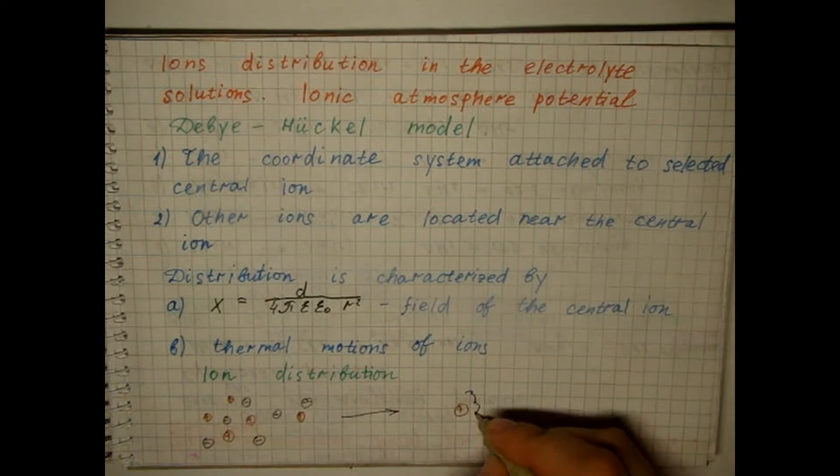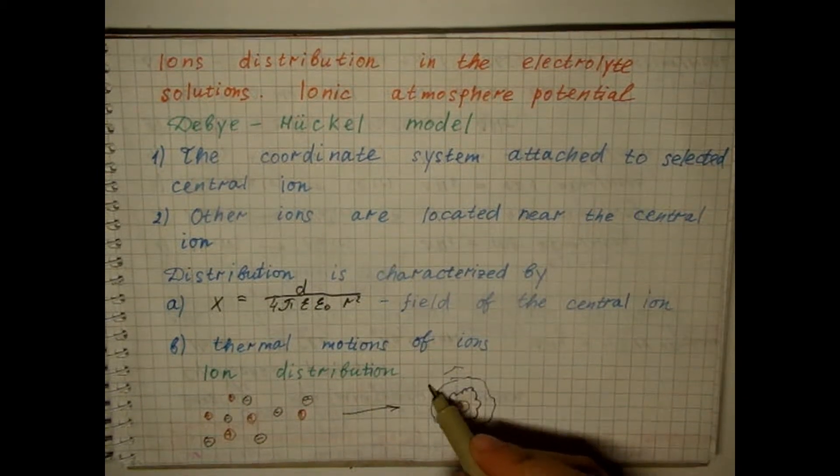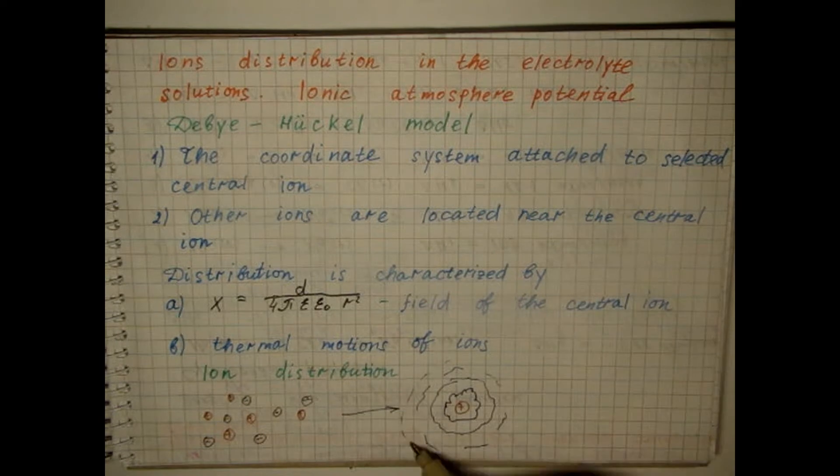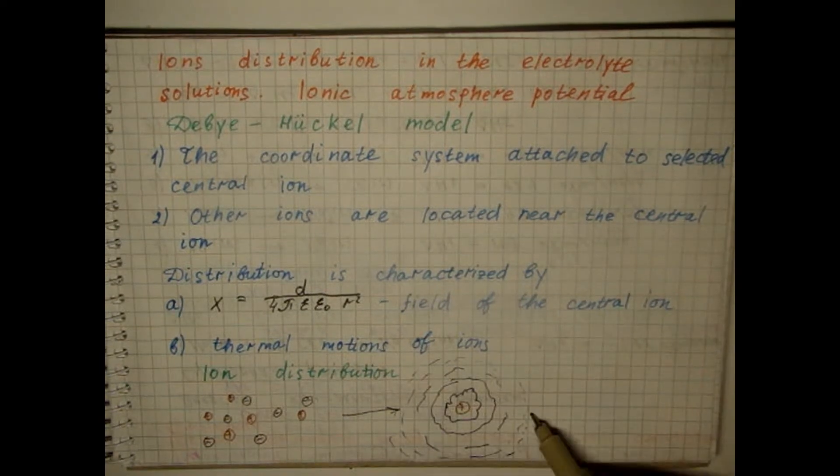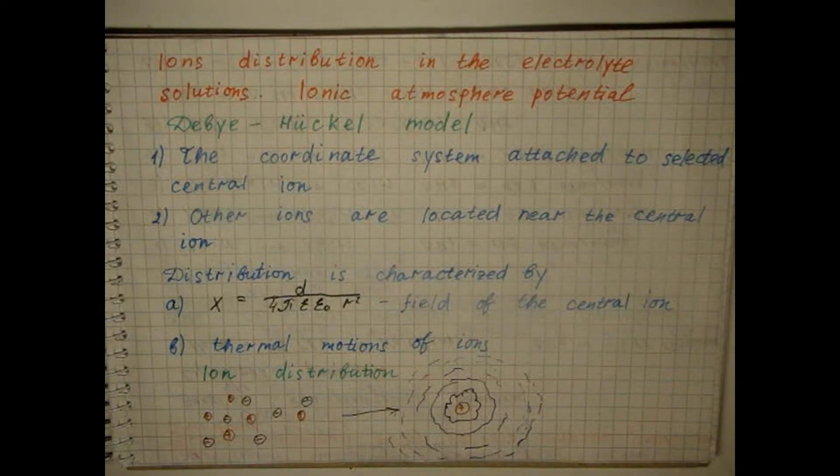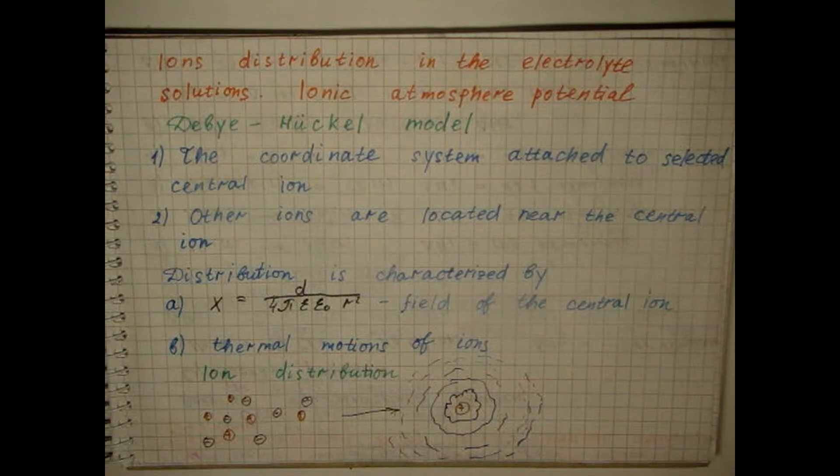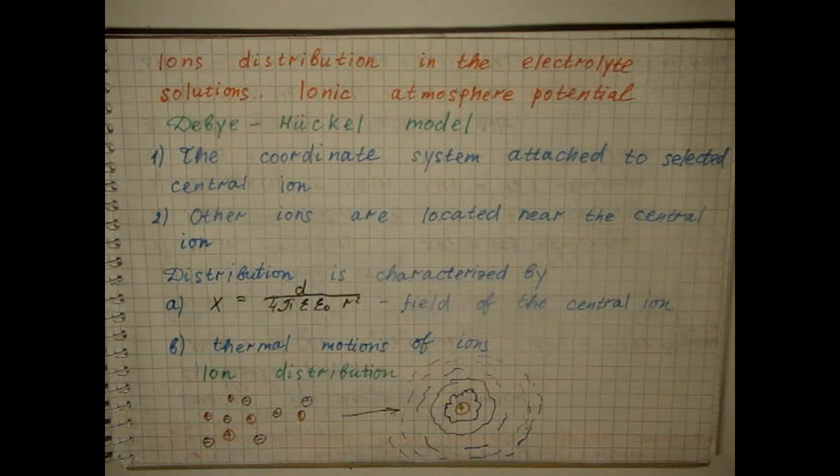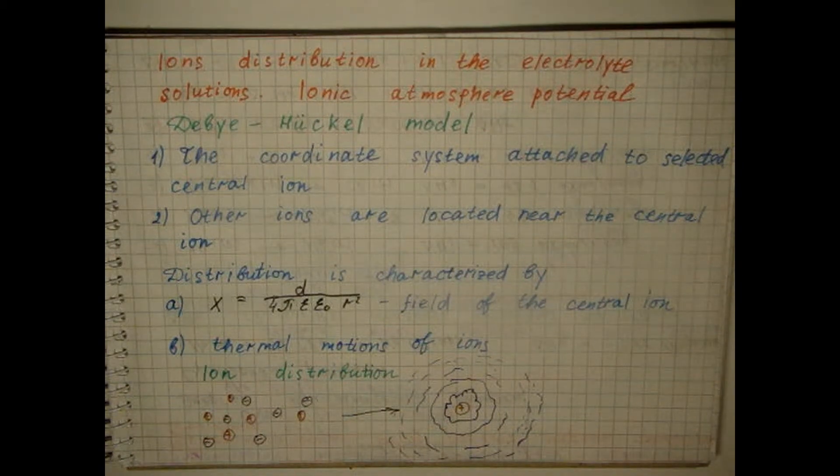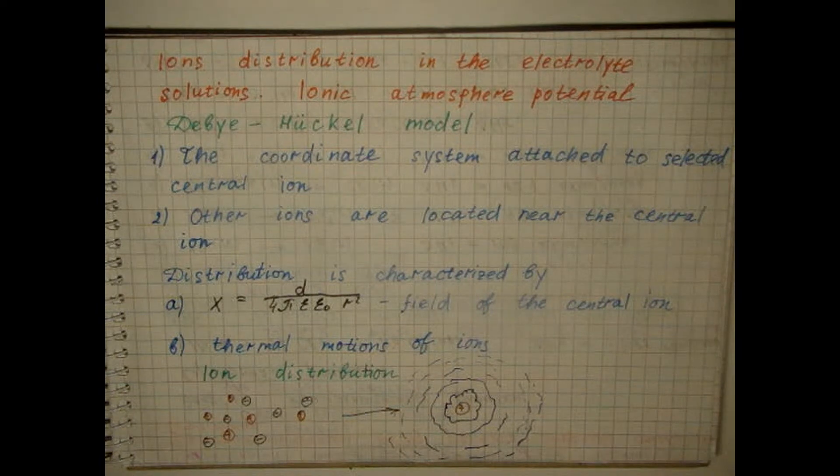The central ion becomes surrounded by an ionic atmosphere. The thermal motion of ions in the ionic atmosphere leads to the fact that the discrete charges of these ions seem to be smeared. As a result, the ionic atmosphere consisting of individual parts can be changed by a cloud of smeared charge. The total charge of the ionic atmosphere should be equal to the charge of the central atom and opposite in sign.